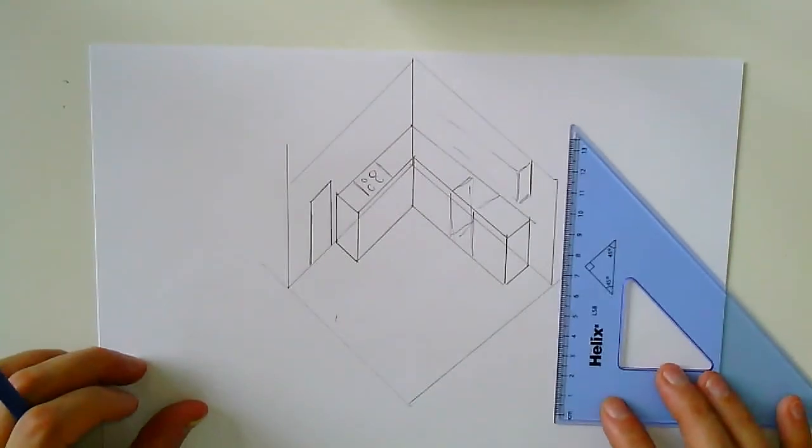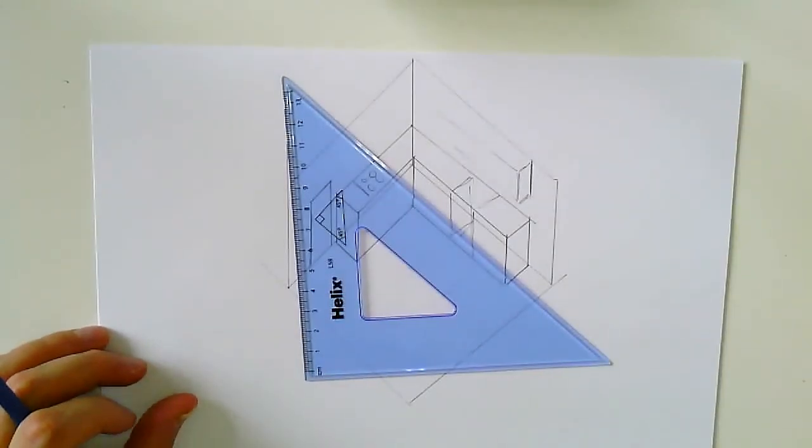So you can add more and more detail using that. The key thing is, it's just like isometric, but it's using a 45-degree set square, which makes it planimetric.